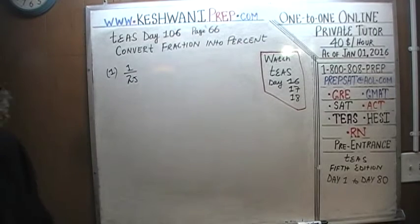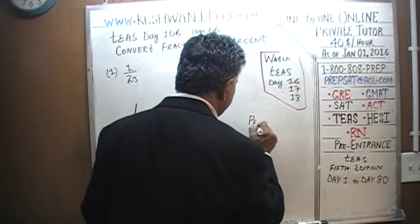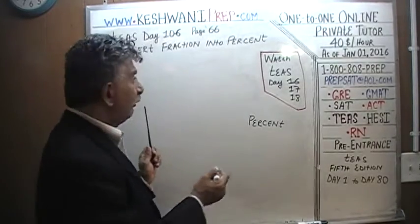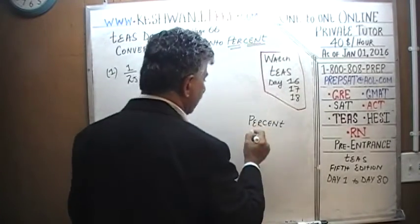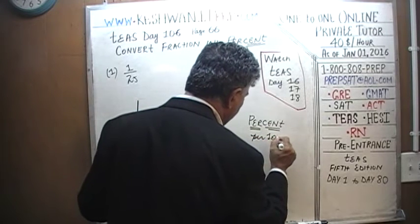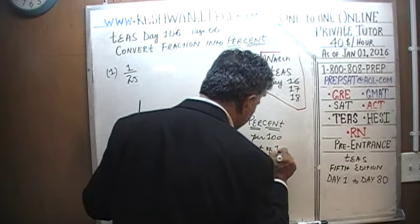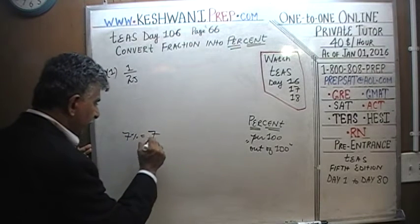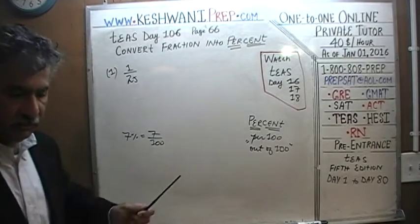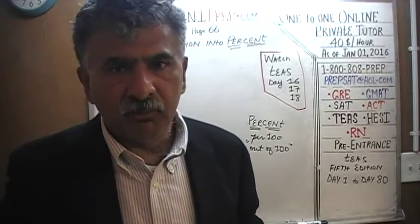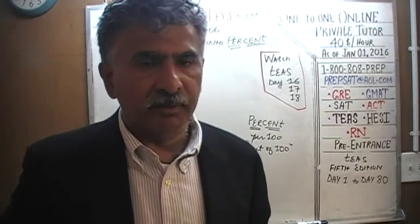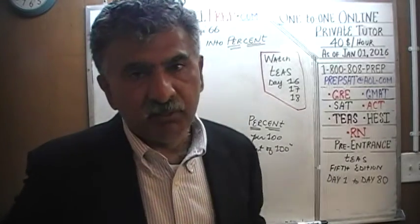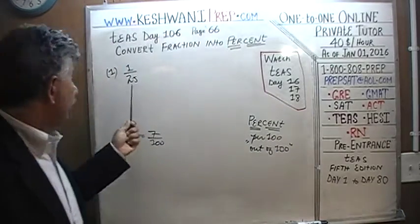What does the word percent mean? Percent means out of one hundred. When somebody talks about seven percent, that simply means seven out of one hundred. Thirty-four percent is thirty-four out of one hundred. Eighty-seven percent is eighty-seven out of one hundred. That's what percent means — out of one hundred. So if we can somehow convert the bottom into a one hundred, we'll have the percentage right away, because whatever number we see on the top, that's how much percentage we have. How can we convert this twenty-five into a hundred? Multiply it by four.